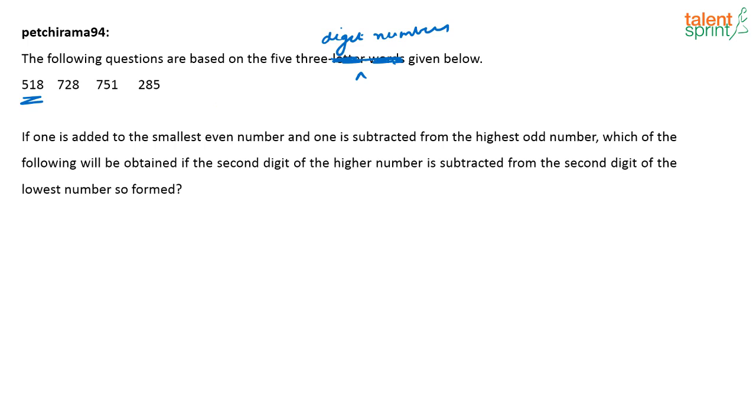So anyway, let's solve. Basically we understand what they are trying to say. So it looks like some type of error here on top, based on five three-letter words. It's wrong, whatever is given here. It has to be four three-digit numbers. Anyway, leave that part.